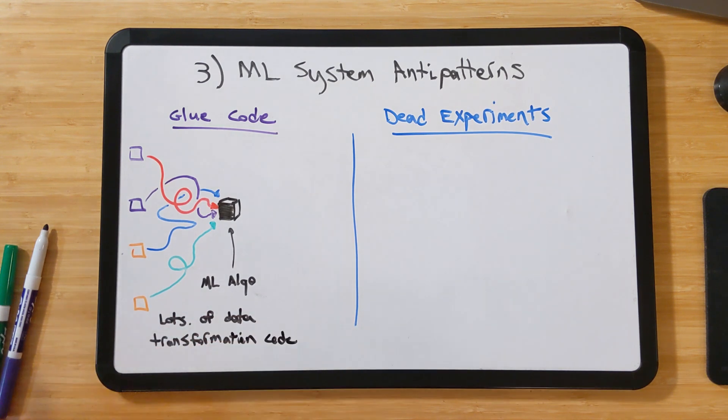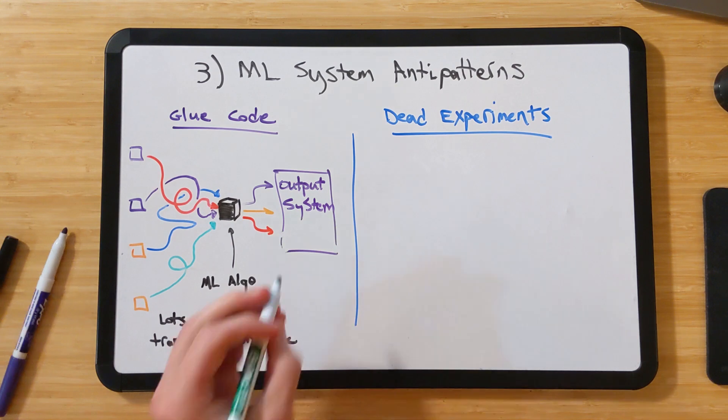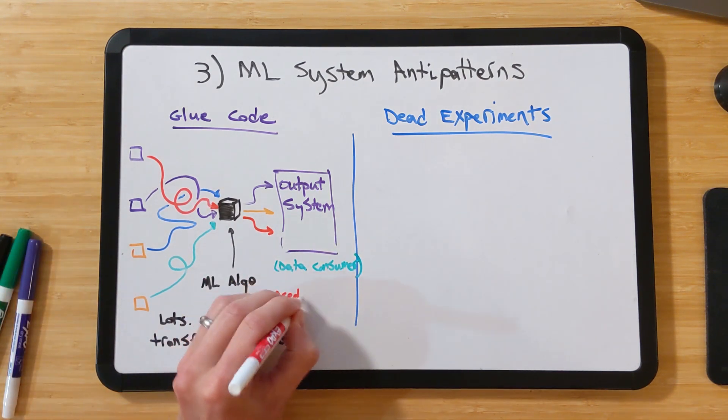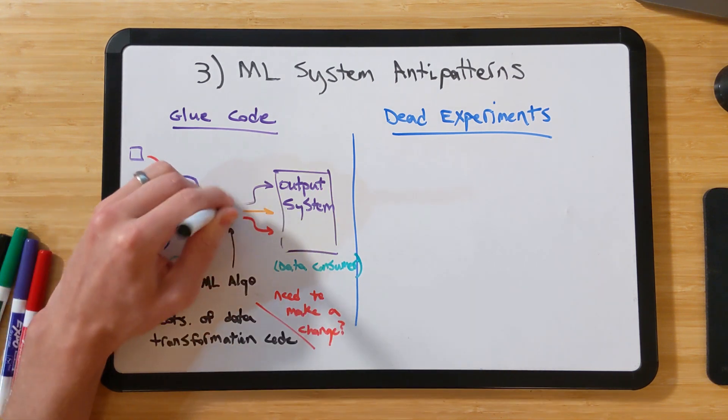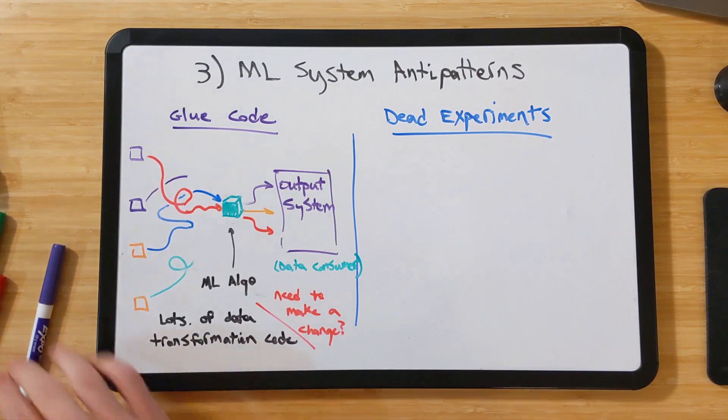the amount of code that is required to wrangle the input and output data into the right formats can significantly outweigh the code of the algorithm itself. This mismatch can slow down development and make tweaks to the algorithm challenging.